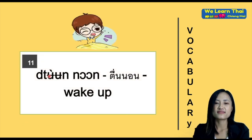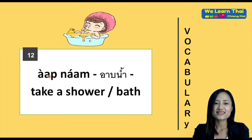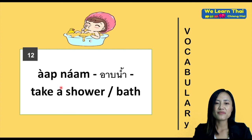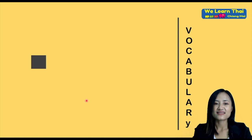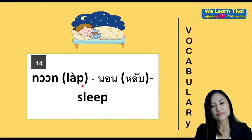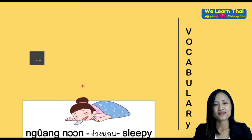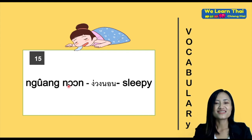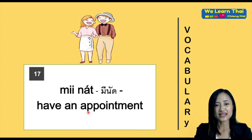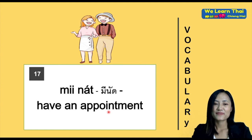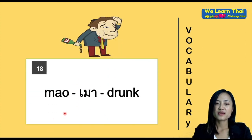Daily routine vocabulary: 'ตื่นนอน' means wake up, 'อาบน้ำ' means take a shower or bath, 'แต่งตัว' means get dressed, 'นอนหลับ' means sleep, 'ง่วงนอน' means sleepy. 'มีนัด' means have an appointment — if you say I have an appointment, say 'ฉันมีนัด'. 'เมา' means drunk — if you say I'm drunk, say 'ฉันเมา'.